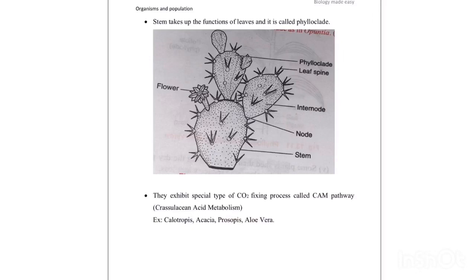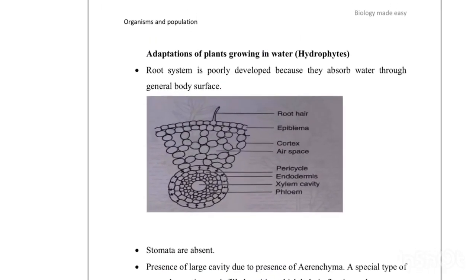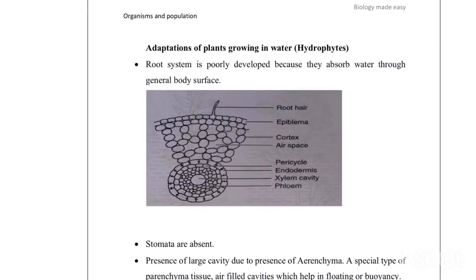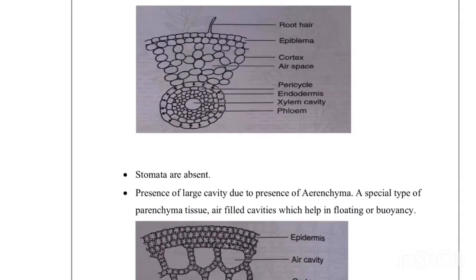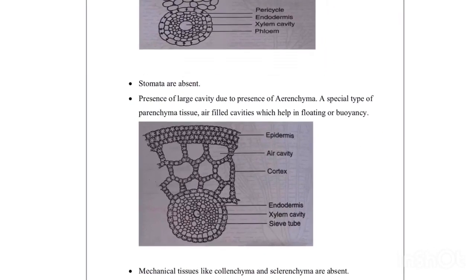Hydrophytes are plants that grow in water where availability of water is very adequate. Their root system is very poorly developed because roots are used only for anchoring — absorption of water and gases takes place through the general body surface. They have a special type of parenchyma called aerenchyma, which has air spaces that help the plant float in water and aid buoyancy. Stomata are usually absent.